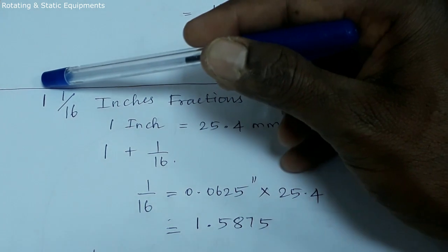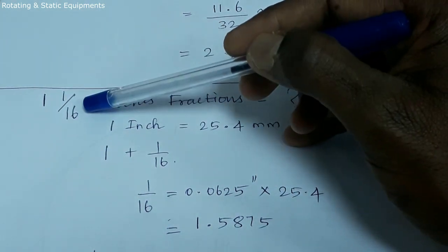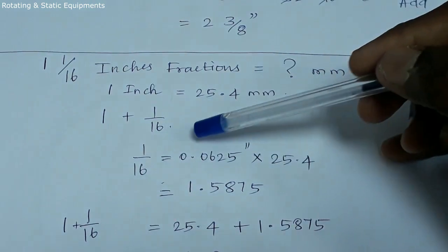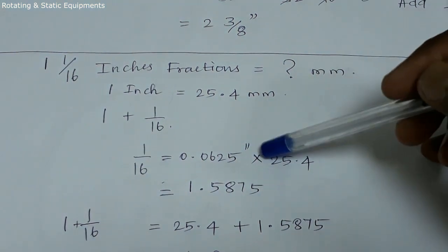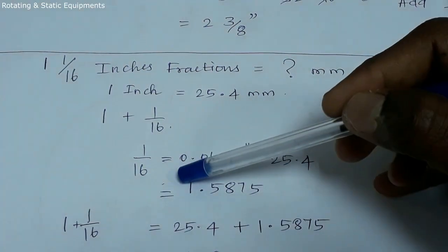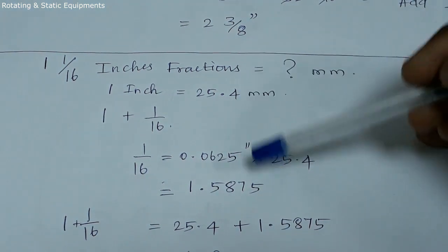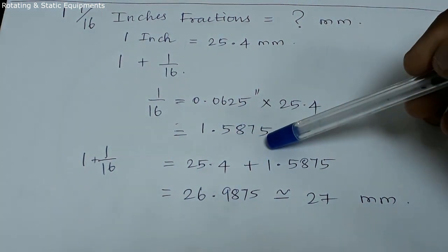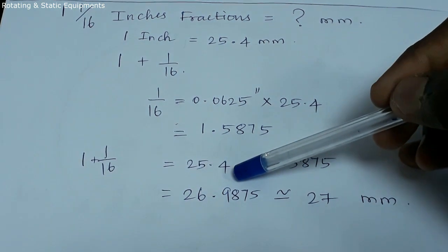Now, we will add 1 divided by 16. So 1/16 is equal to 0.0625 inches. We will multiply by 25.4 to get the value of 1.5875mm.